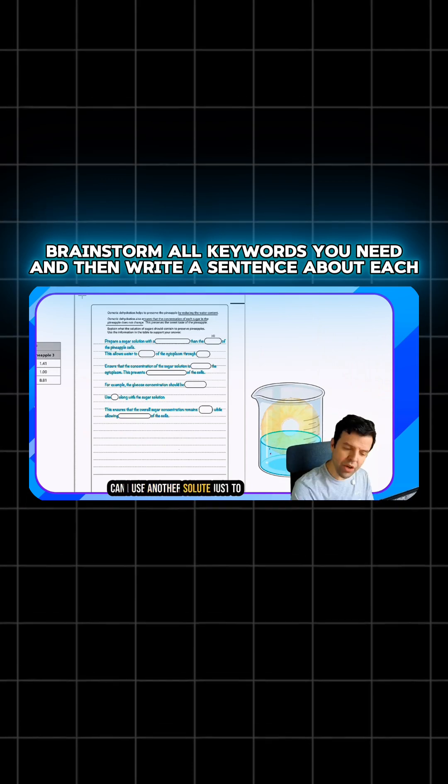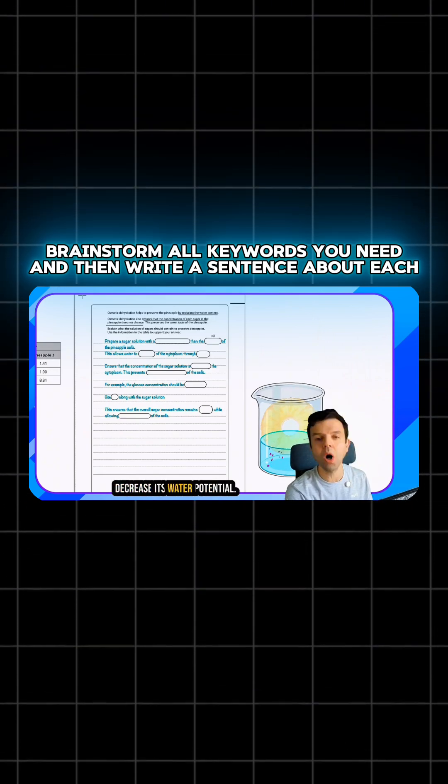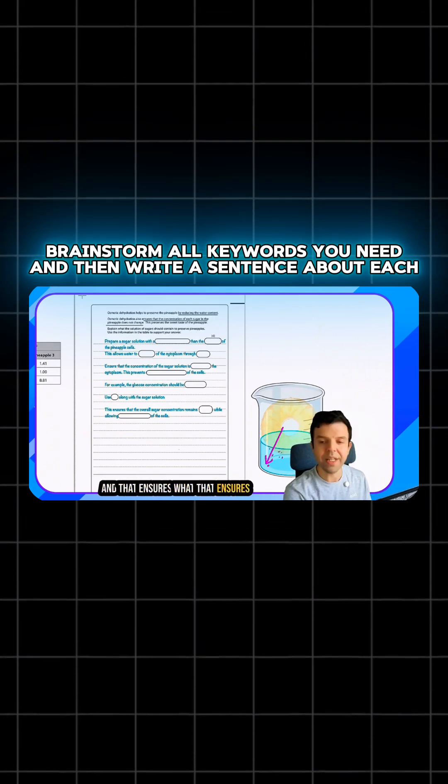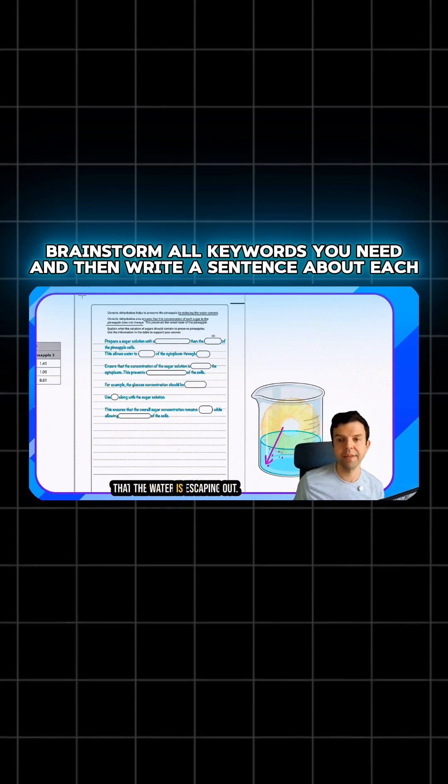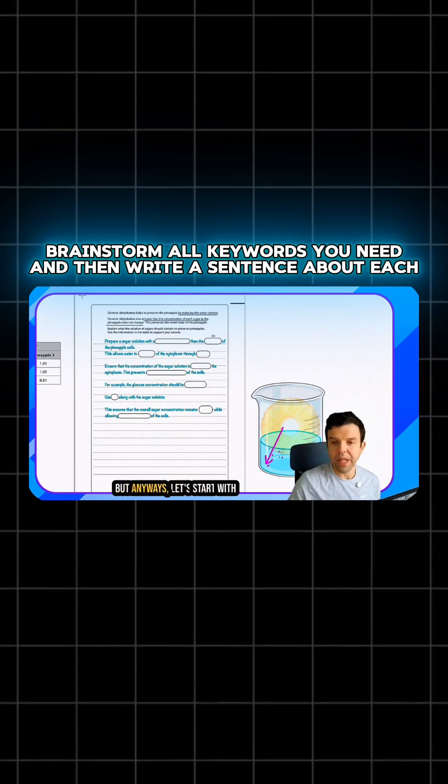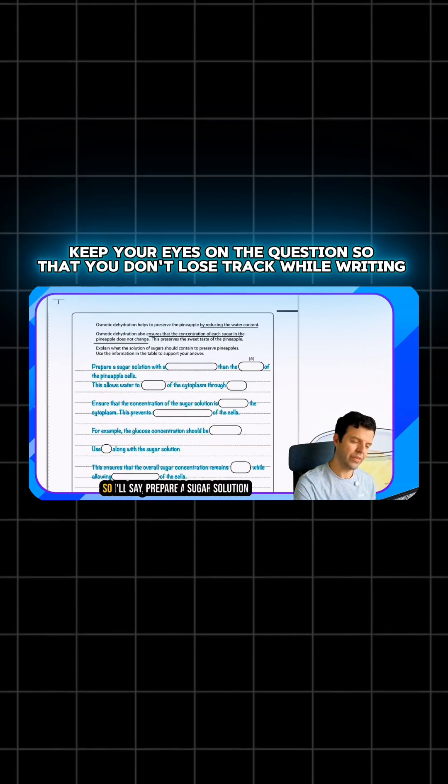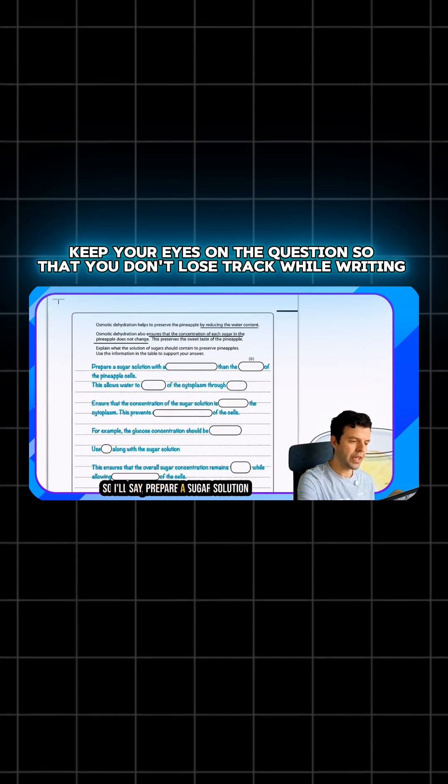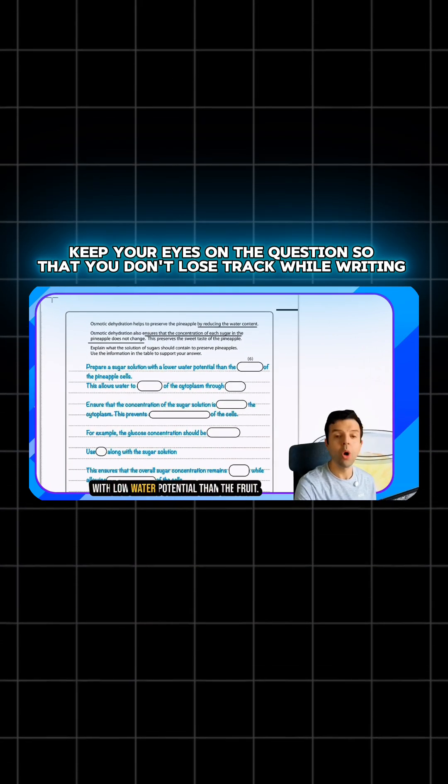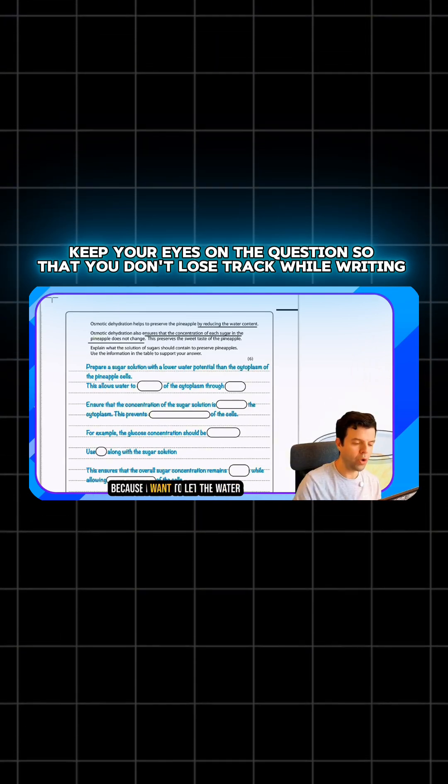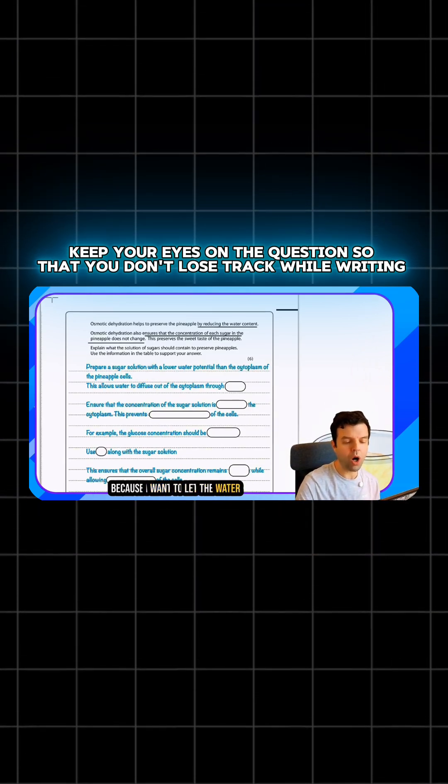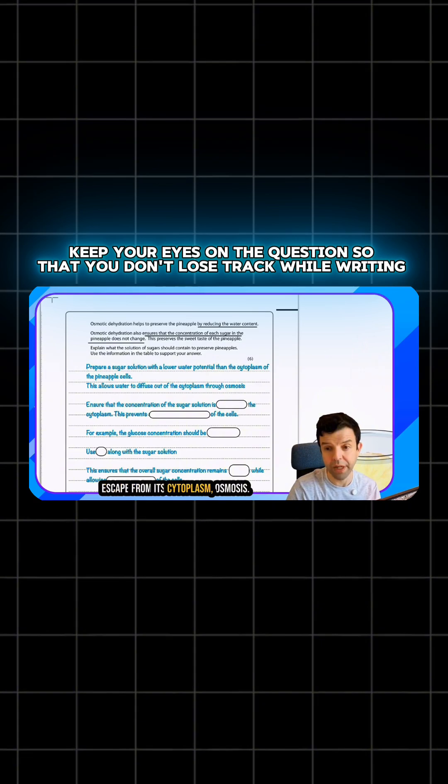Can I use another solute just to decrease its water potential? And that ensures that the water is escaping out. But let's start with those easy marks at the beginning. So I'll say prepare a sugar solution with low water potential. Then the fruit will let the water escape from its side of the line, osmosis.